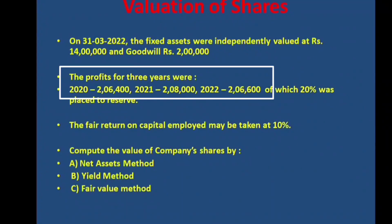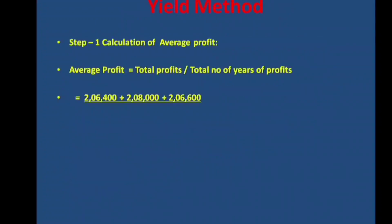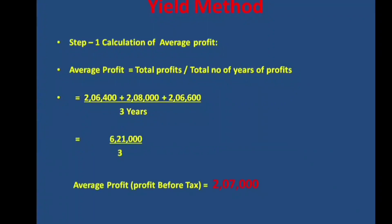The profits for 3 years are: 2020 — 2,64,000; 2021 — 2,80,000; 2022 — 2,66,000. Total = 8,10,000. Average profit = 8,10,000 ÷ 3 = 2,70,000.